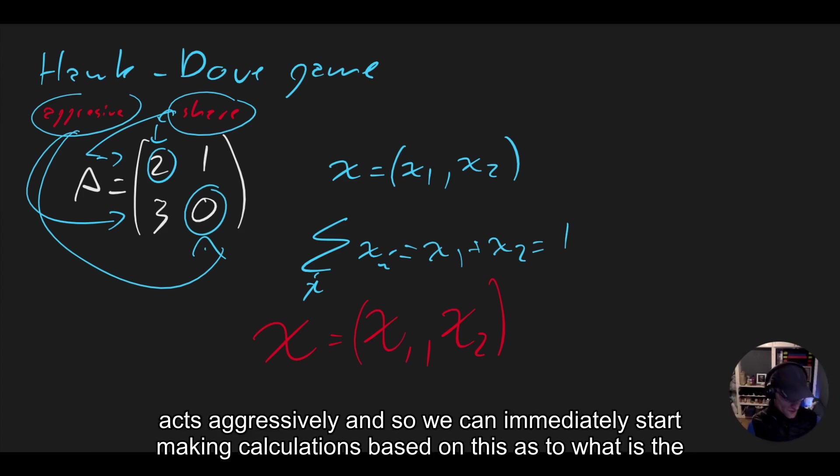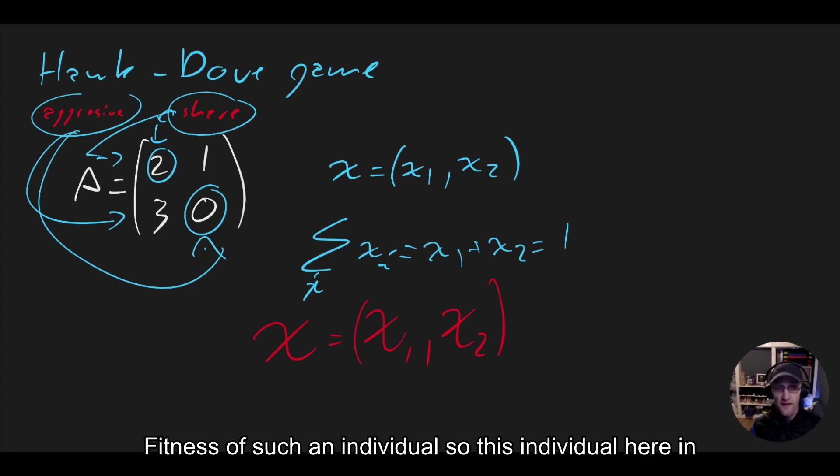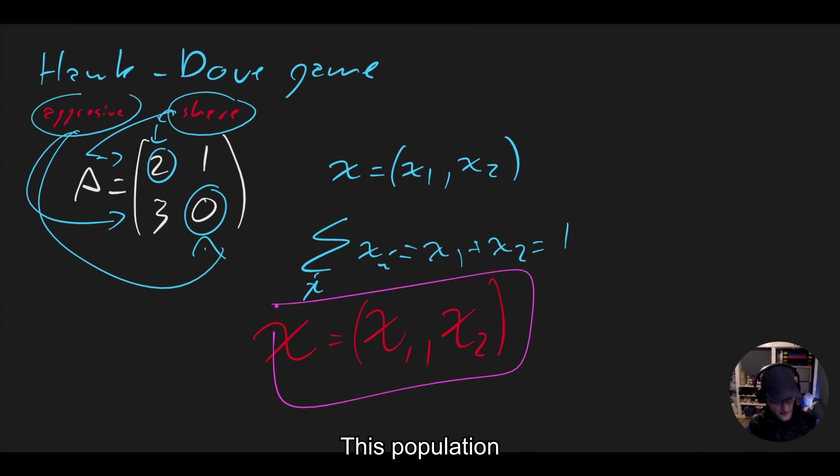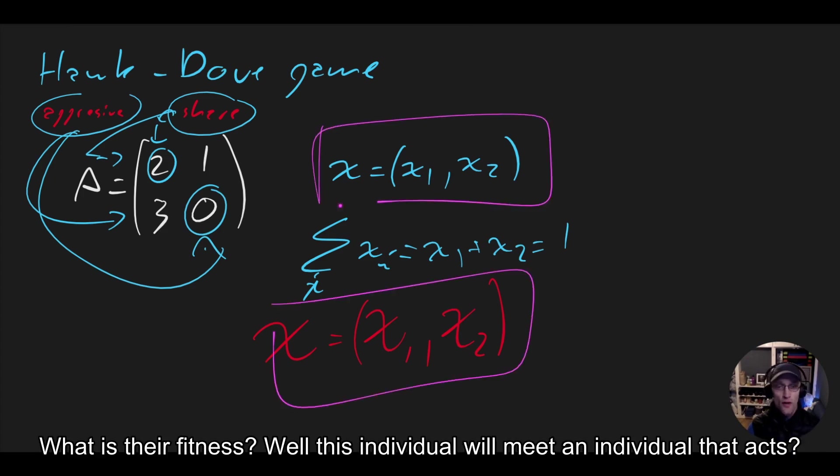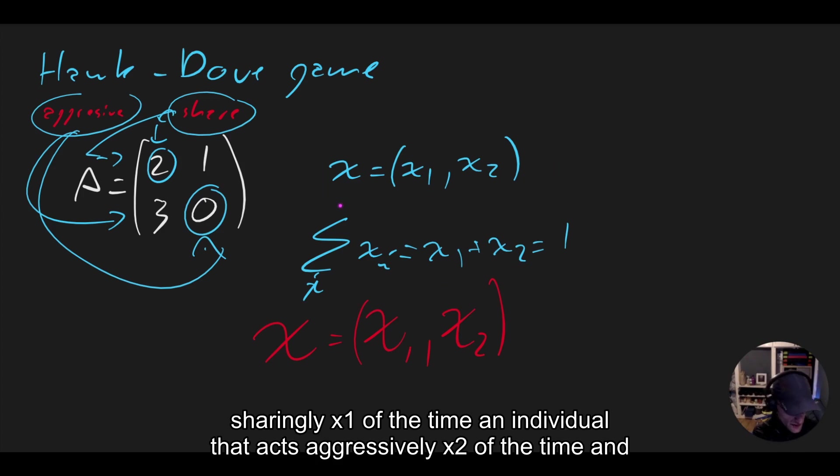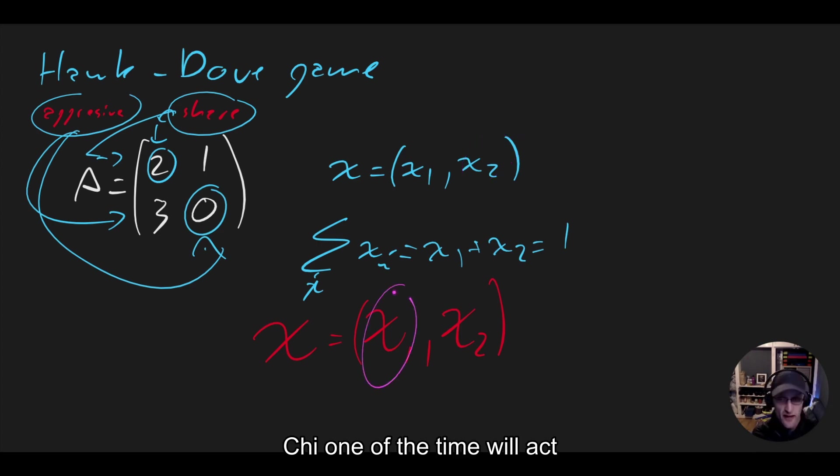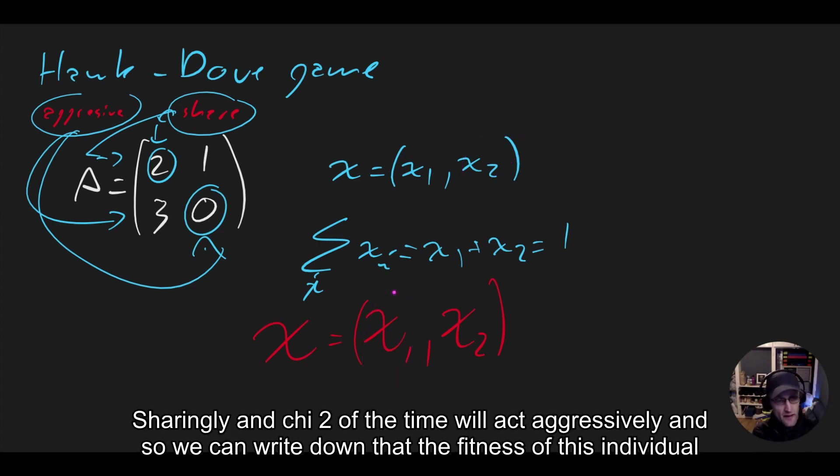And so we can immediately start making calculations based on this as to what is the fitness of such an individual. So this individual here in this population, what is their fitness? Well, this individual will meet an individual that acts sharingly x1 of the time, an individual that acts aggressively x2 of the time, and chi1 of the time will act sharingly, and chi2 of the time will act aggressively.